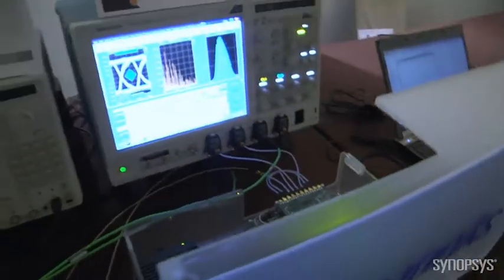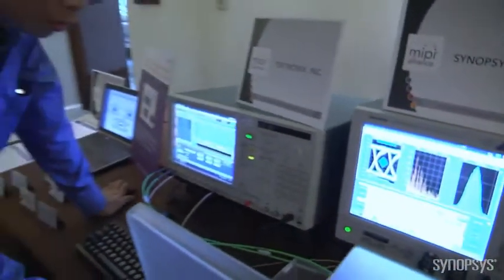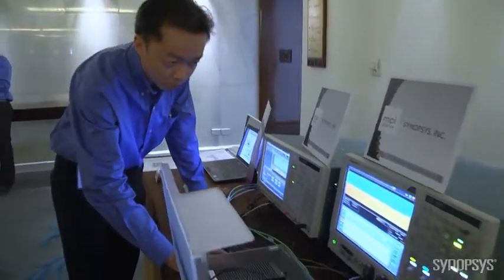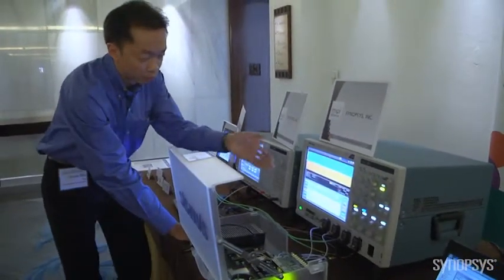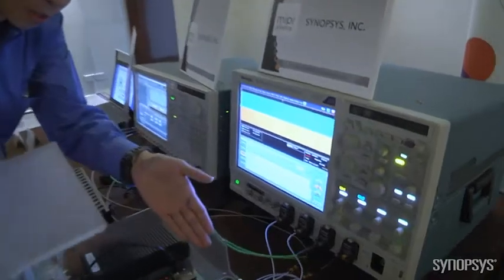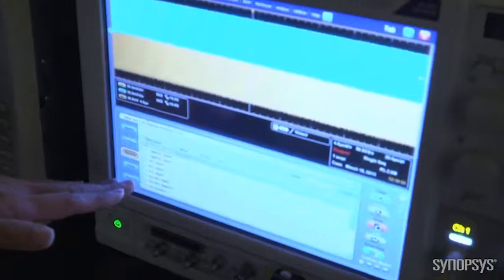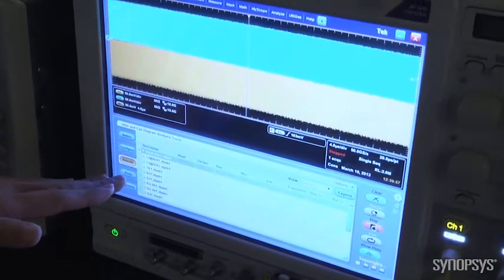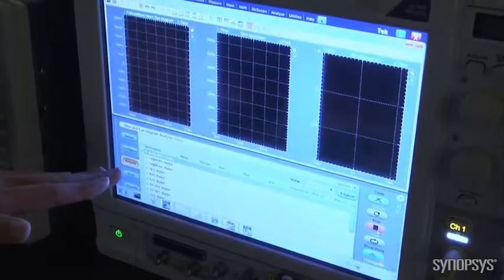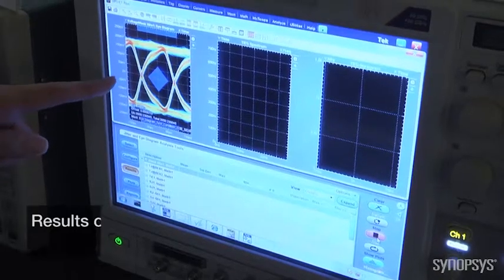Sure, let me show you a live capture of the information. So right here, the scope is being connected onto the Synopsys D3 board. And right now, it's doing a live capture of various parameters for the MIPI measurement, M5 measurement. So what's coming out right now, here is a beautiful eye diagram.